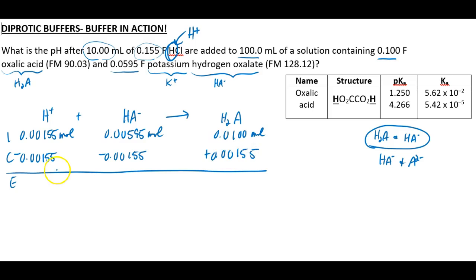So after that reaction occurs, we've consumed all of the H plus. We've consumed a little bit of the HA. We have 0.00440 moles of HA left. And we've made even more moles of the H2A. That's 0.0115 with an insignificant 5 moles of H2A.